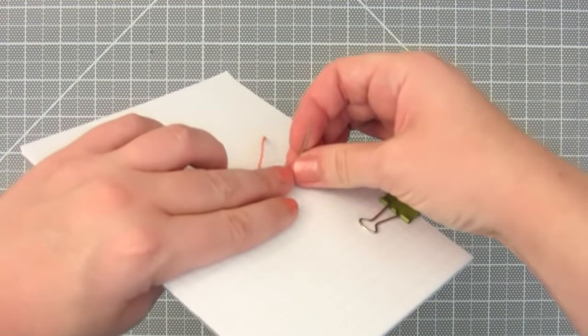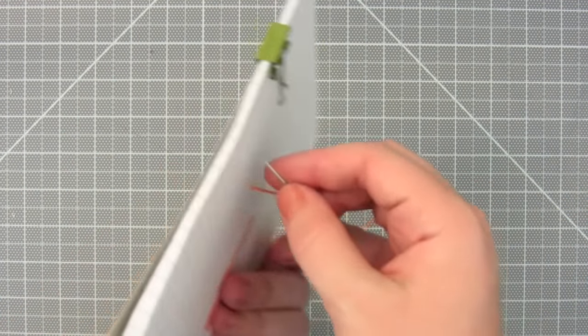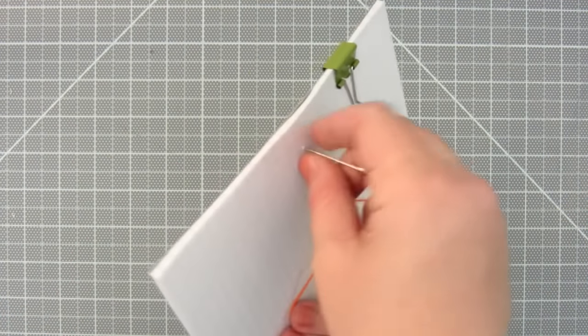Sew all the way to the last hole on the right end, and then sew all the way to the last hole on the left end, and then sew back to the middle.